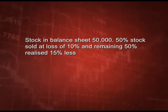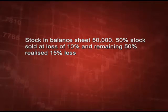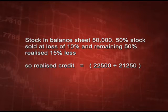Entry number 2: Suppose there is stock in the balance sheet of 50,000, and 50 percent of the stock is sold at a loss of 10 percent, and the remaining 50 percent is realized at 15 percent less. So in the realization account, we will show 25,000 minus 10 percent, that is 22,500, plus 21,250 after deducting 15 percent.